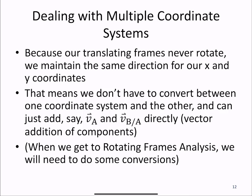When considering relative motion with translating frames, our frames never rotate. So we maintain the same directions of X and Y as our fixed coordinate system has. That means we don't have to convert between coordinate systems, and we can add the vectors, say VA and VB with respect to A directly. However, when we get to rotating frames analysis, we will need to convert between coordinate systems.